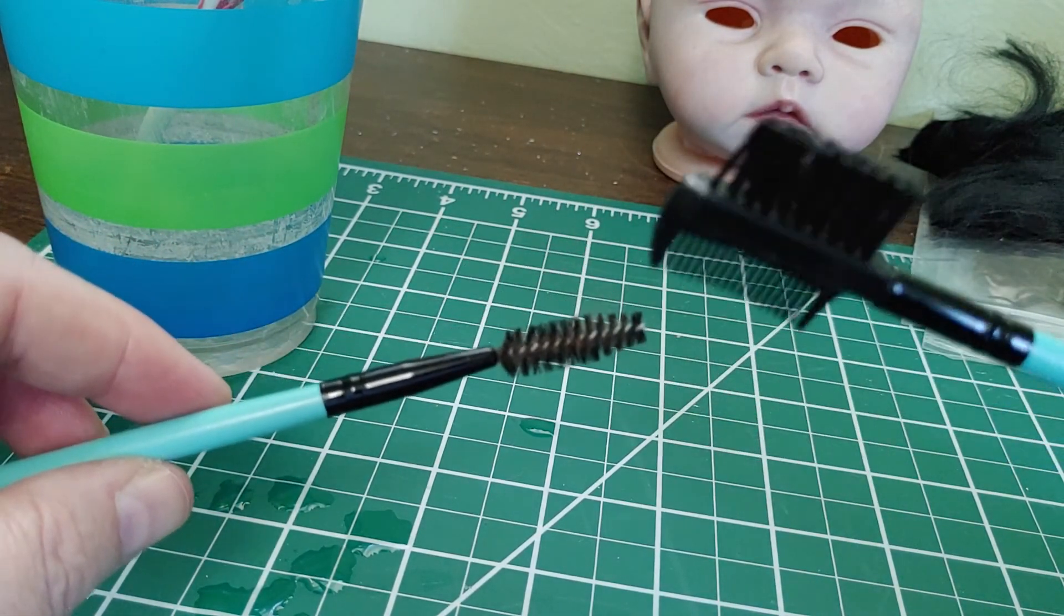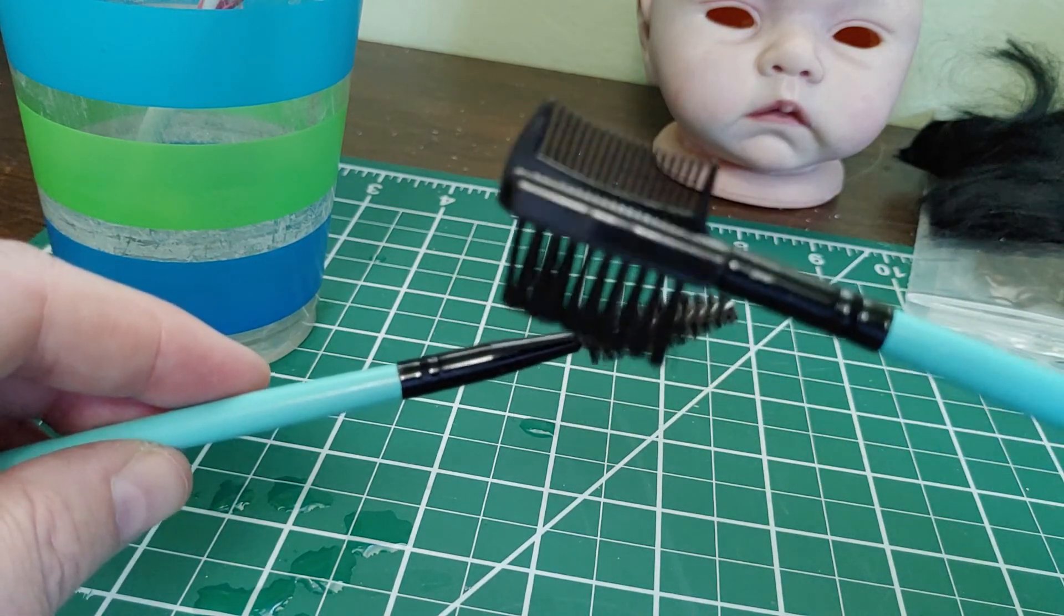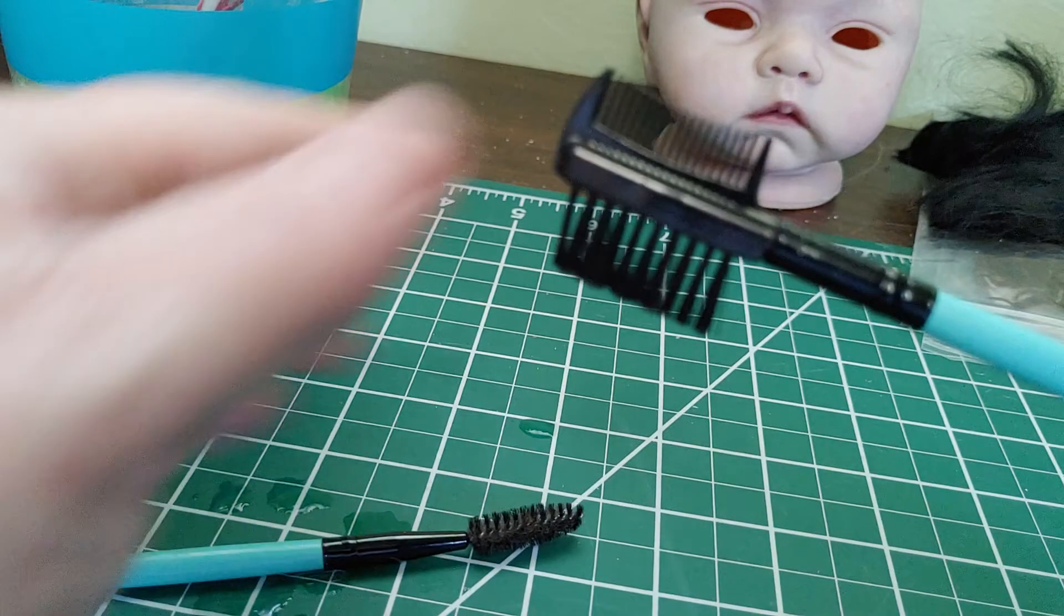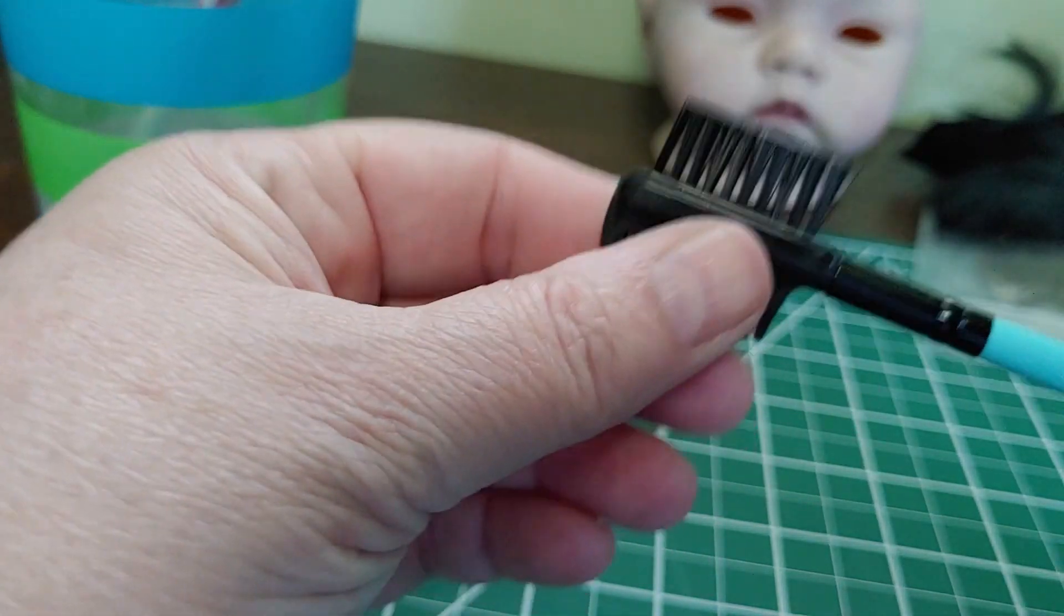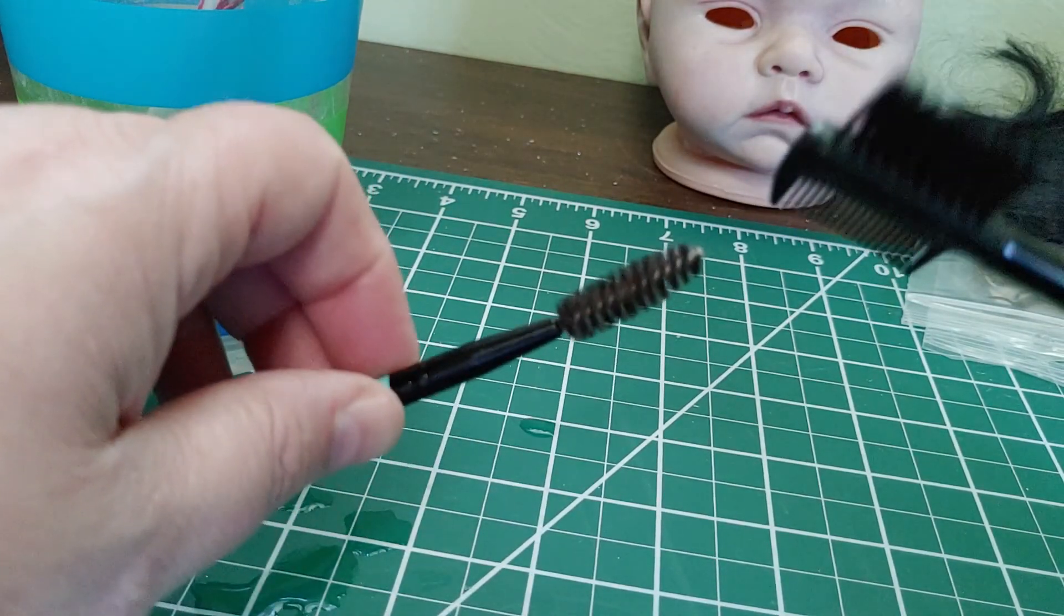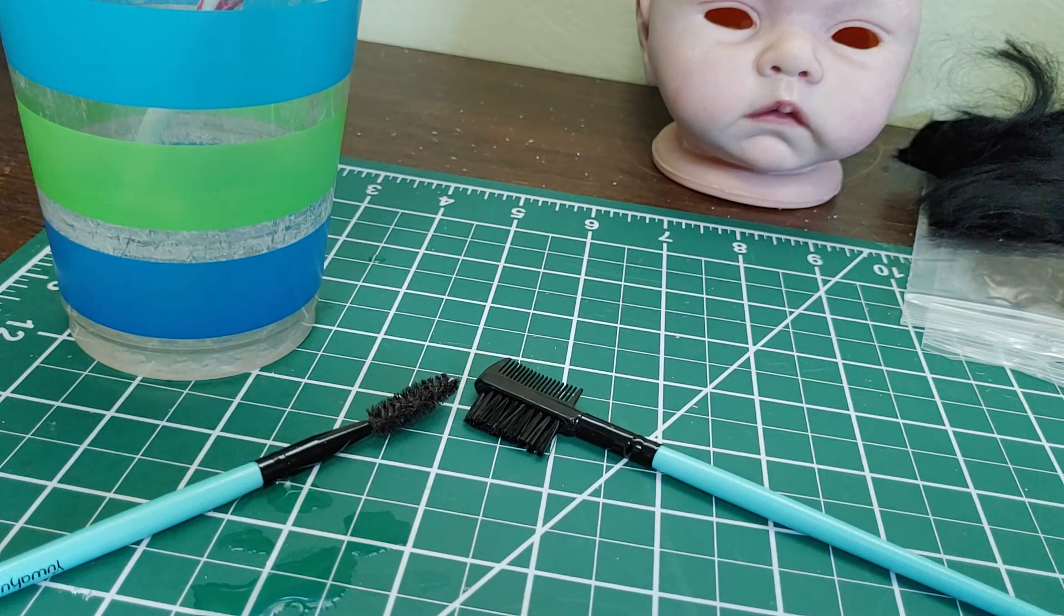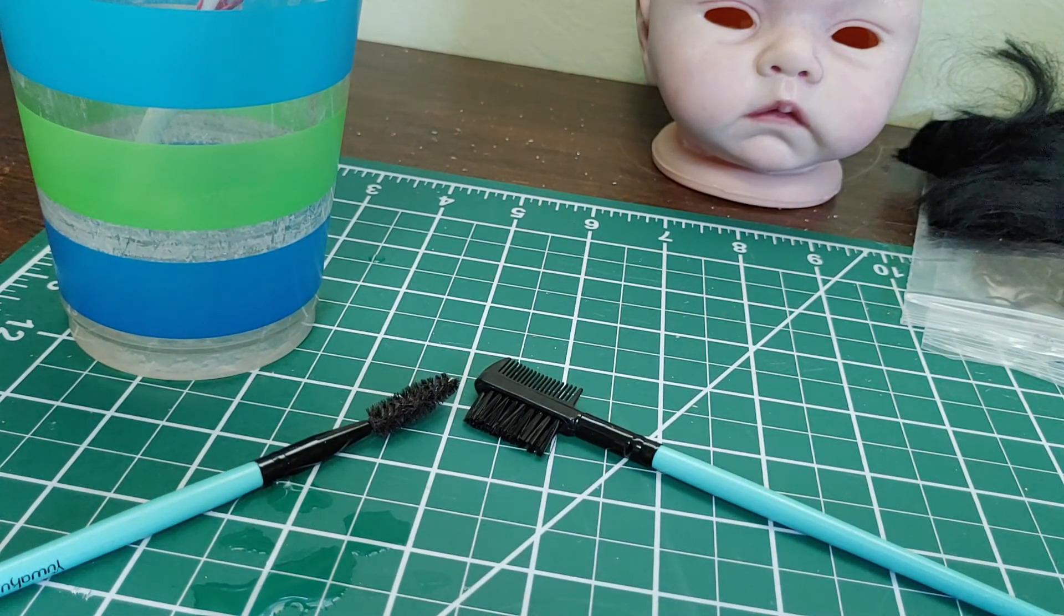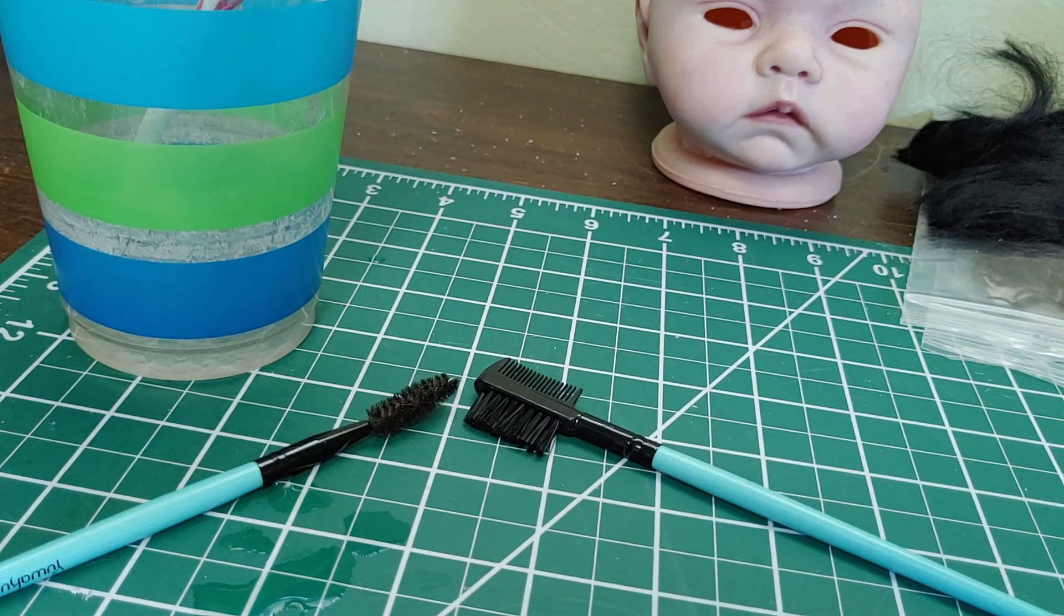And then one of these too. This is also supposed to be for eyebrow styling, but it also works really good for styling your reborn doll hair. You've got a softer side right here and then you've got more of the comb side right there. So I hope you've enjoyed these tips and tricks and tools that will be great as you're working on your reborn dolls. TTFN, ta ta for now.